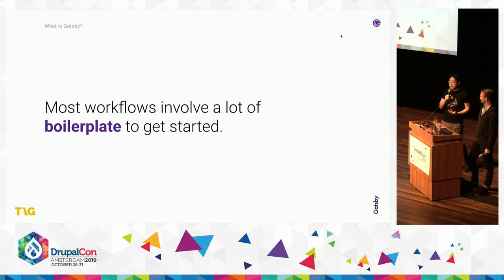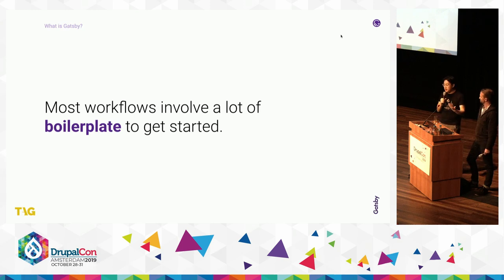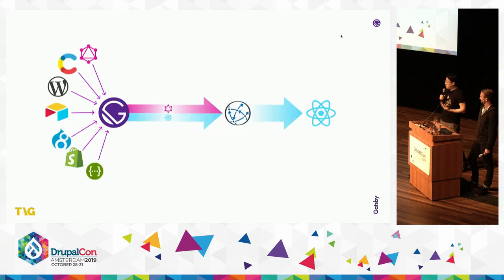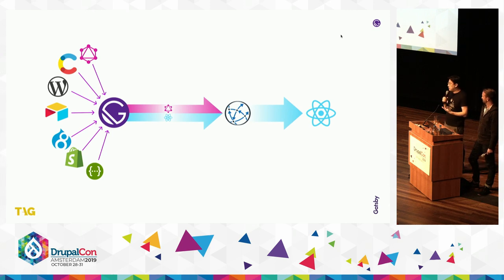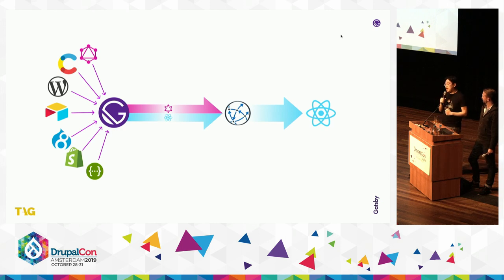A lot of workflows involve a lot of boilerplate to get started — a certain procedure for installing dependencies, a new pipeline for CI/CD, how we perform testing. But the quintessential benefit of Gatsby is the incredible array of integrations with a variety of different systems. You can use any kind of API in the backend and consume that from the Gatsby side — GraphQL, Contentful, WordPress, and so forth — and Gatsby gives you an agnostic GraphQL API that allows you to query any of that data and push it into a React application.